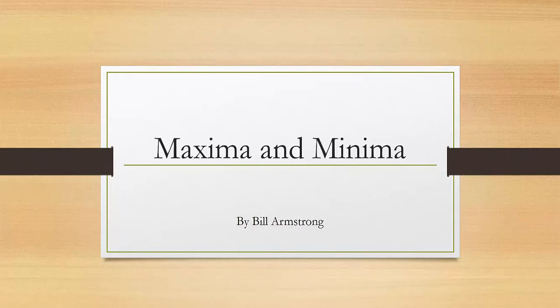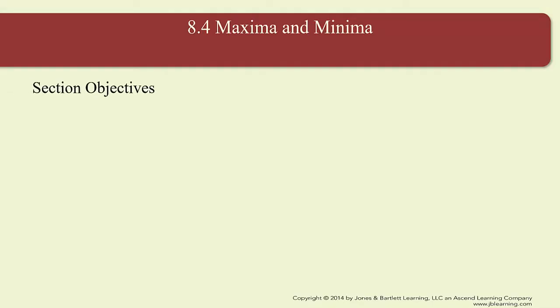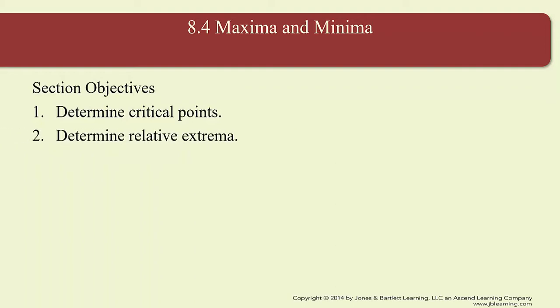Alright folks, we're getting ready to start the last topic here in applied calculus. The topic of section 8.4 is maxima and minima, or relative maximums and relative minimums. The objectives we're going to look at here in section 8.4 will be: objective 1, determining critical points; objective 2, determine relative extrema; and objective 3, determine maximum revenue.